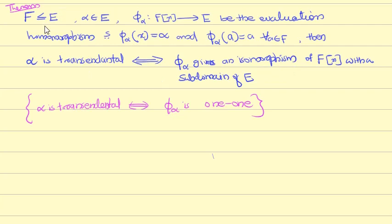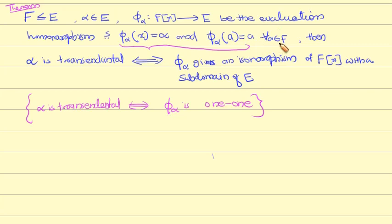Theorem: if F is less than or equal to E, alpha belongs to E. Let phi_alpha be the evaluation homomorphism from F[x] to E, where phi_alpha(x) = alpha and phi_alpha(a) = a for all a in F. Then alpha is transcendental if and only if phi_alpha gives an isomorphism of F[x] with a subdomain of E.